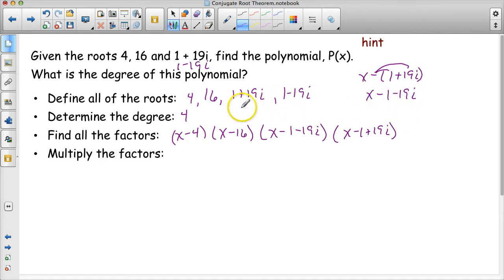Likewise, when I do x minus 1 minus 19i, I have to distribute it. That's where this one comes from too. Now I'm going to multiply the factors together. Remember, I can only multiply two factors at a time. So let's start with x minus 4 times x minus 16. When I multiply that together, I get x squared minus 20x plus 64.